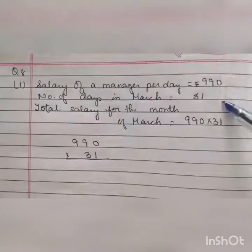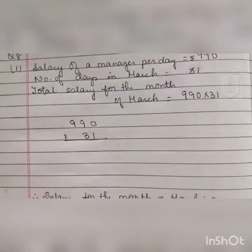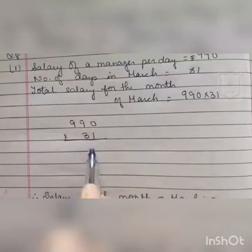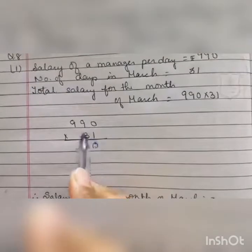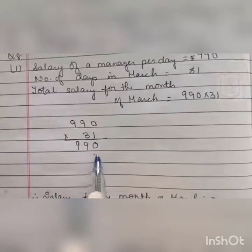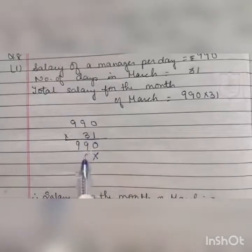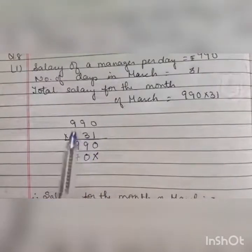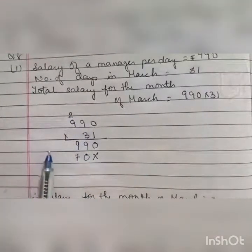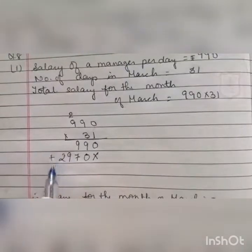We will calculate 990 multiplied by 31. First, multiplying 1 with 0 we get 0, then multiplying 1 with 9 we get 9, again 1 times 9 is 9. Now we will multiply by 30: we write 1 cross and multiply with 3. 3 times 0 is 0, 3 times 9 is 27 — write 7, carry over 2. 3 times 9 is 27, plus 2 is 29.